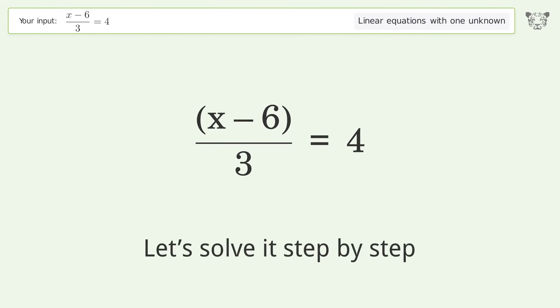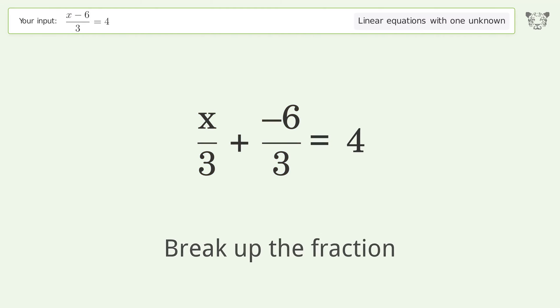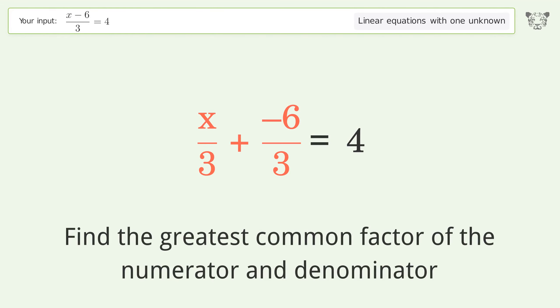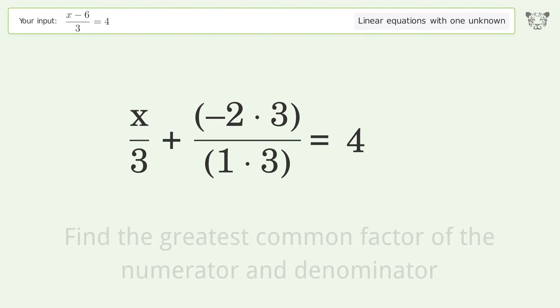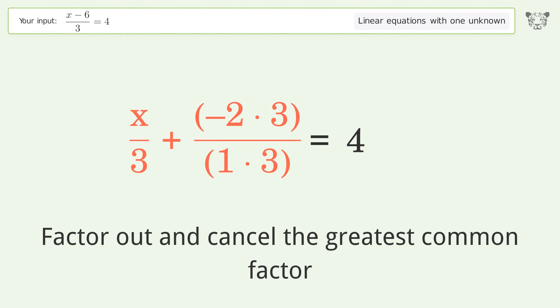Let's solve it step by step. Simplify the expression. Break up the fraction. Find the greatest common factor of the numerator and denominator. Factor out and cancel the greatest common factor.